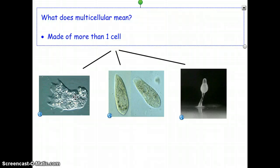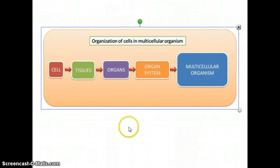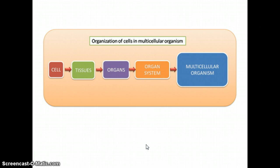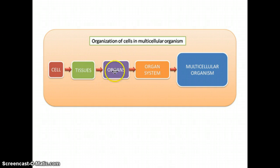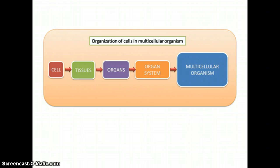When you take one cell and multiply it by maybe millions, trillions, or billions, you get a multicellular organism. The way those organisms are organized is: a cell makes up tissues, tissues make up organs, organs make up organ systems, and organ systems make up a multicellular organism like you or I, or a dog or a cat.